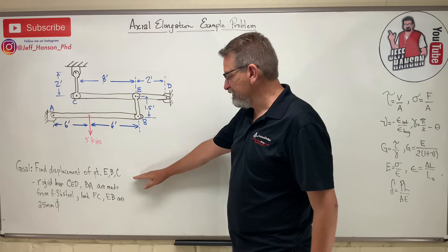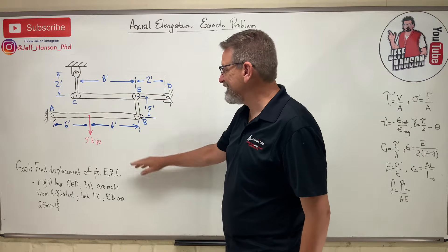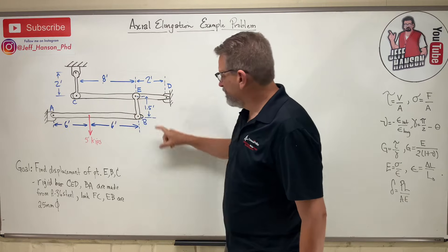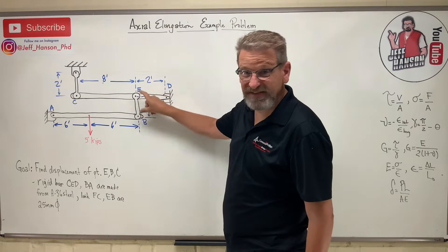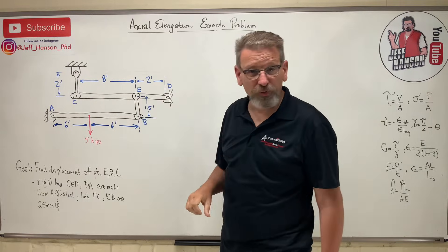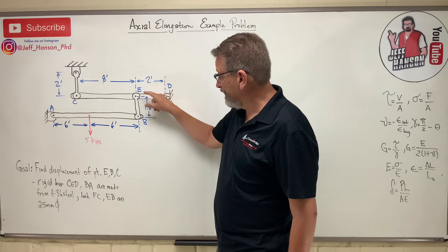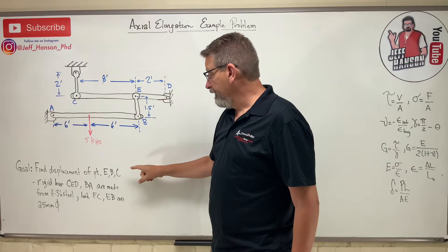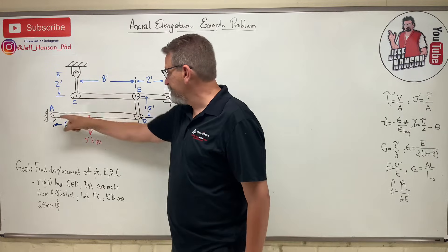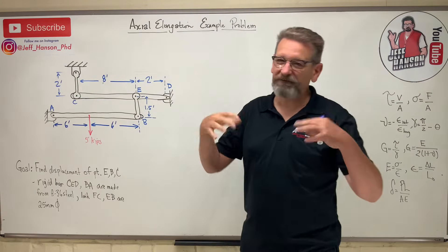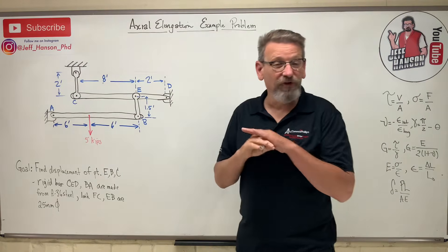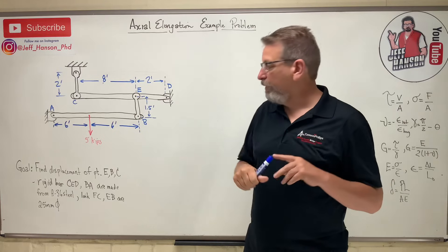We got a little problem here. It says find the displacement of points E, B, and C. Doesn't E and B — wouldn't they be the same amount? No, because that is also going to stretch, so it's going to displace plus stretch. And then we have rigid bar CED, which is this guy, and rigid bar AB. Our stuff is supposed to bend, but when you see the word rigid bar, that means there's no deflection, no stretching. It's a magic bar.